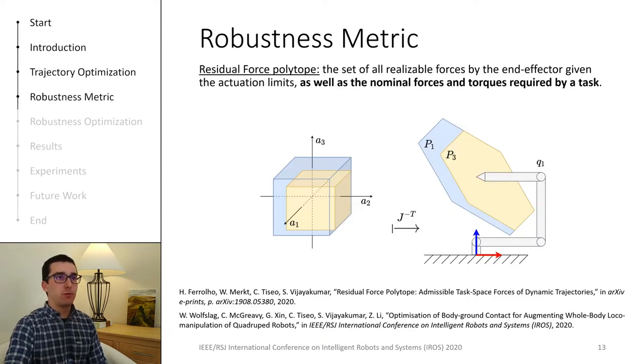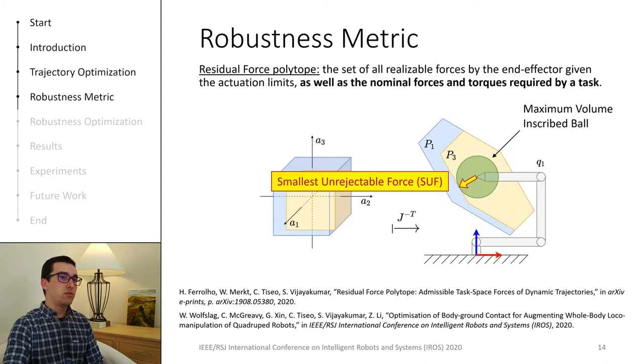In previous work, we have proposed an exact representation for the set of forces that the robot is able to resist given a nominal trajectory and its actuation limits. We have also defined the robustness metric based on the magnitude of the smallest unrejectable force, which is given by the radius of the largest ball that can be inscribed in the residual force polytope, and centered at the robot link. In this example, it is centered at the end effector.